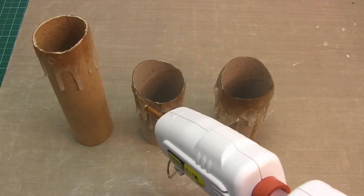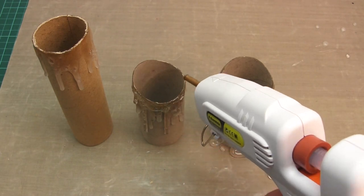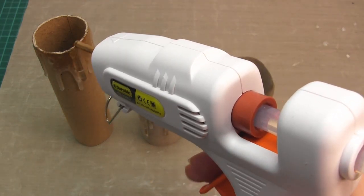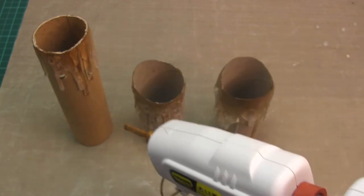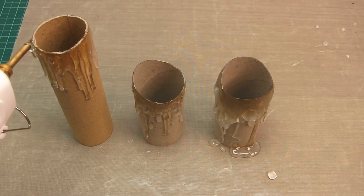For the last layer or two, let the glue gun cool slightly so the glue is less runny and stays near the top. Once satisfied, leave the glue to cool completely.